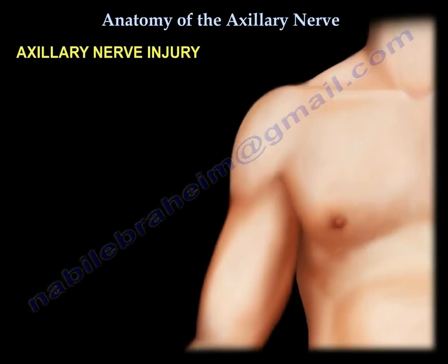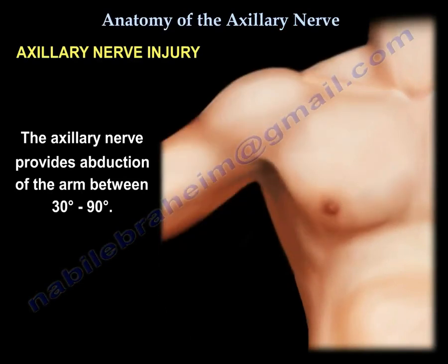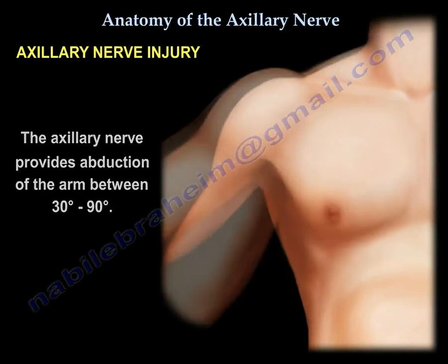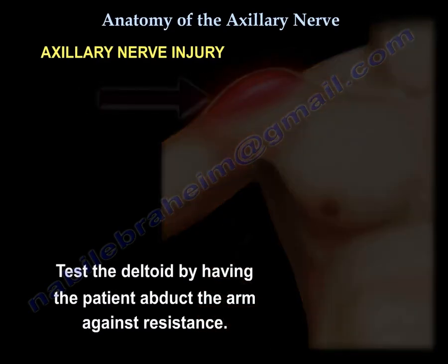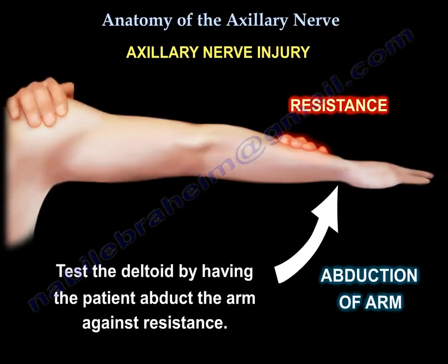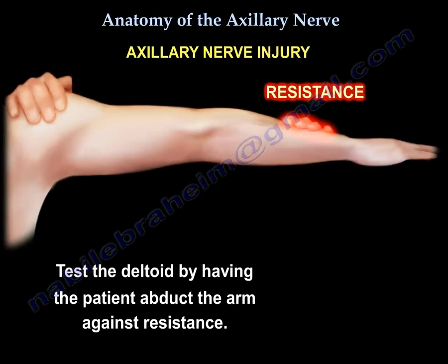Axillary nerve injury. The axillary nerve provides abduction of the arm between 30 to 90 degrees. Test the deltoid by having the patient abduct the arm against resistance, and by moving the arm posteriorly and superiorly against resistance. This is a good test to assess the posterior deltoid.